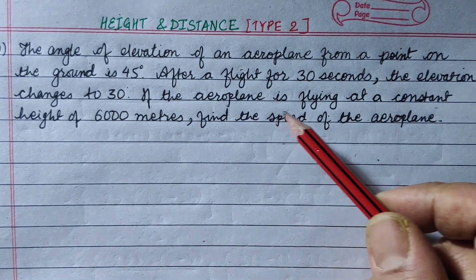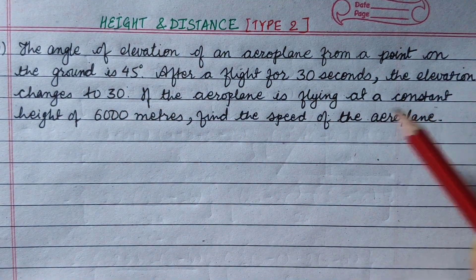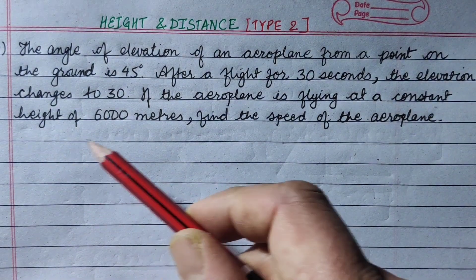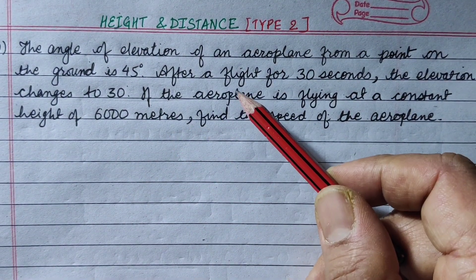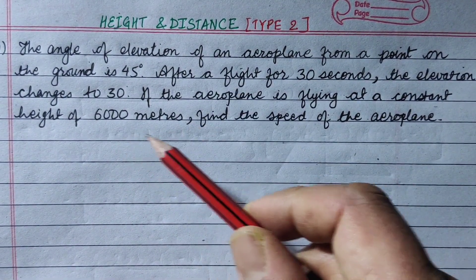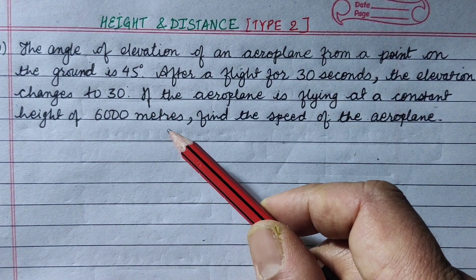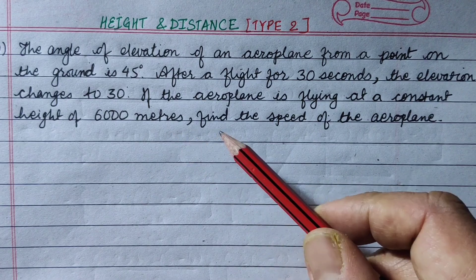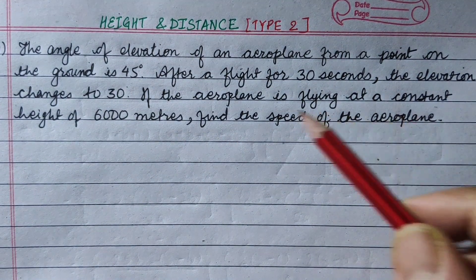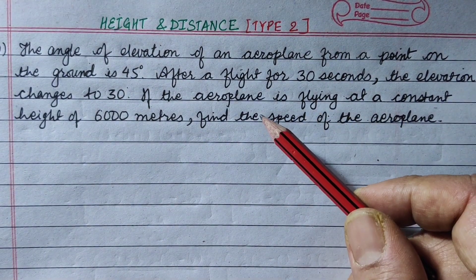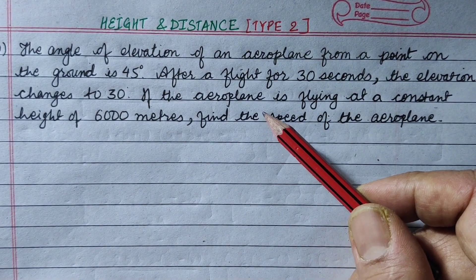If the aeroplane is flying at a constant height of 6,000 meters, find the speed of the aeroplane. We have to find the speed of the aeroplane.